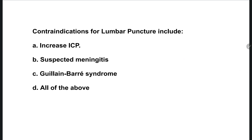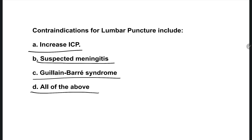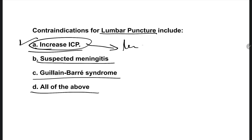The next question: contraindications for lumbar puncture include — options are: increased ICP, suspected meningitis, Guillain-Barré syndrome, all of the above. The right one is option A, increased ICP. In the case of increased intracranial pressure, if you perform a lumbar puncture, there is a risk of fluid leakage. So increased ICP is a contraindication for lumbar puncture.